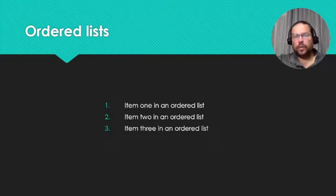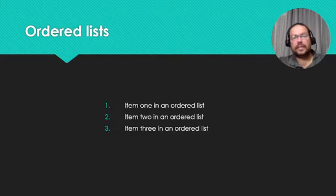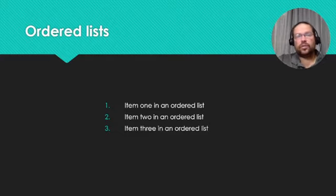So what is an ordered list? It's got an order, it's got a specific sequence, so it's going to be numbered, or there's going to be letters or Roman numerals. As you can see on the screen, we've got one, two, three — it's an ordered list.